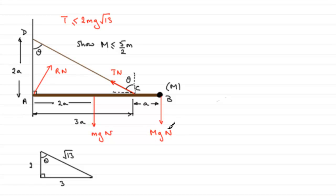And we're also told that the string will break if the tension exceeds 2mg√13. And so if the string doesn't break, we've got to show that big M is less than or equal to 5/2 multiplied by small m.